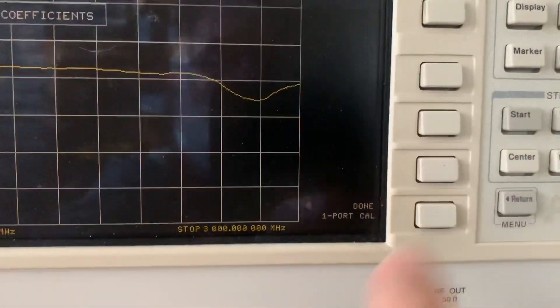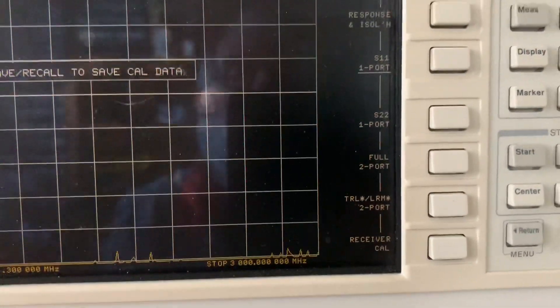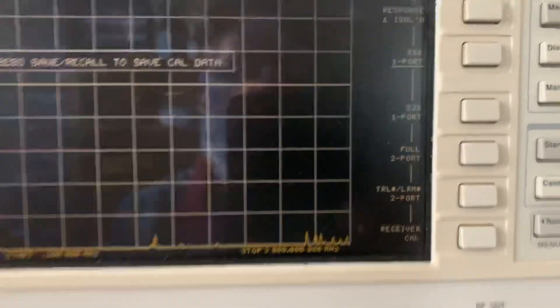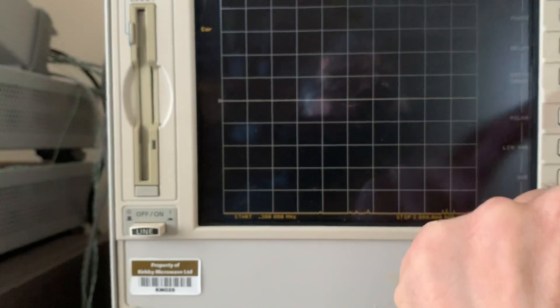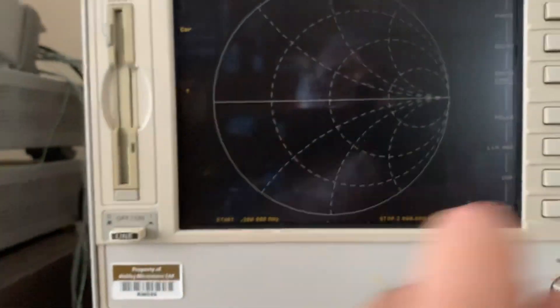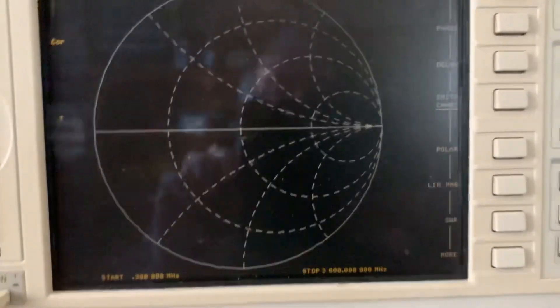We've done one port calibration. Now we're going to look at this on the Smith chart. You'll have difficulty seeing this, but the attenuator is right in the middle of the Smith chart. You can see that dot. I'm just going to loosen it off slightly.